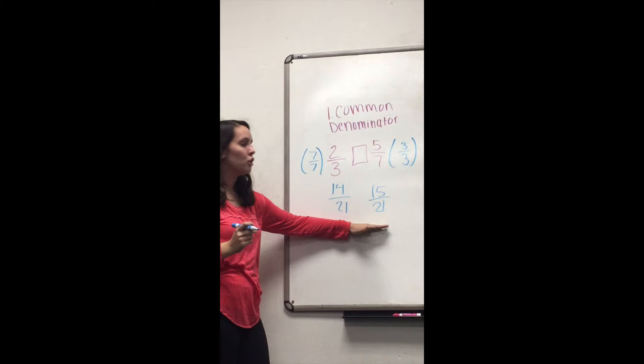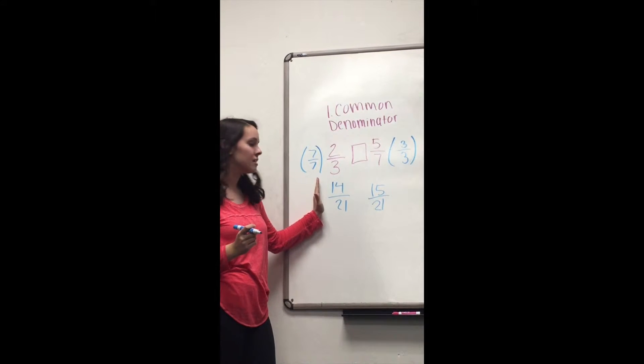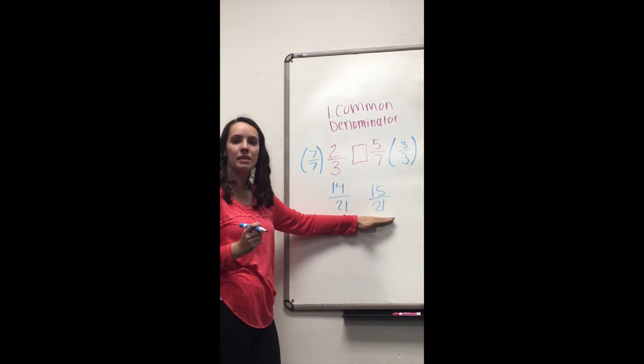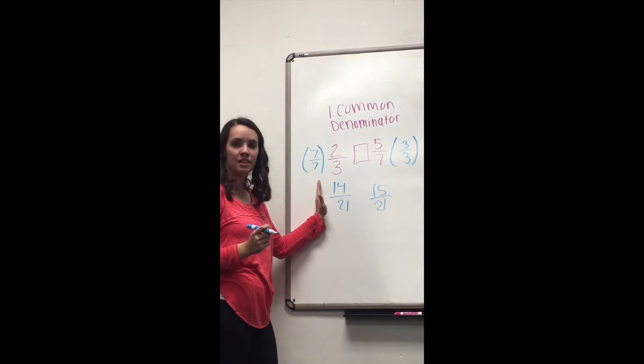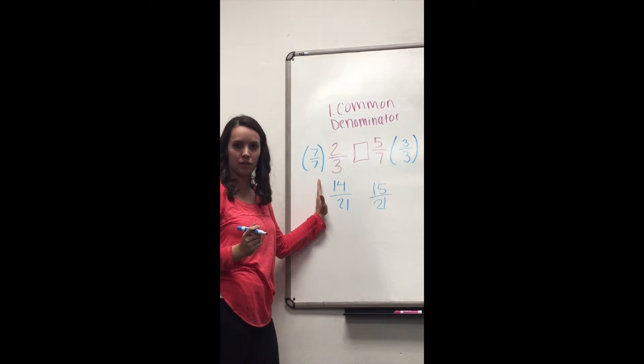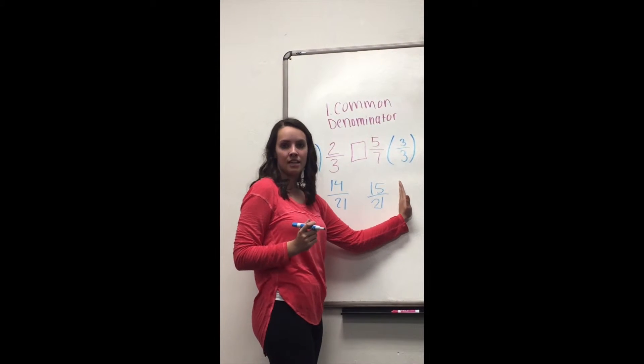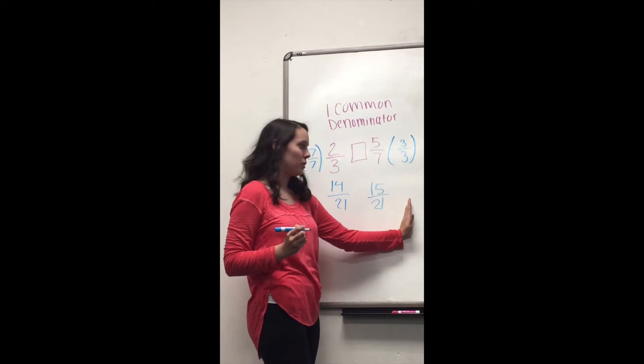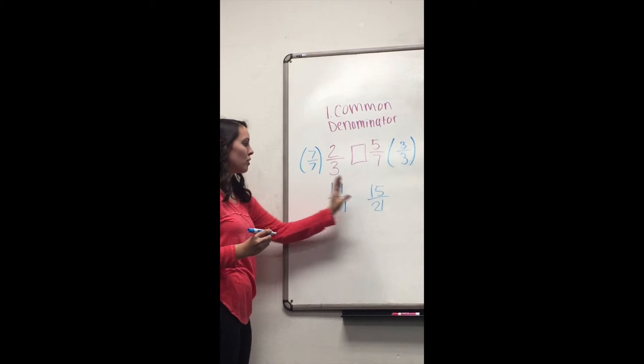Now that we have a common denominator, we can just compare the numerators, because our whole is cut into 21 equal pieces. And over here, we have 14 copies of the unit fraction, which is 1 over 21. And over here, we have 15 copies of the unit fraction, which is 1 over 21. So we're going to look at our numerators.